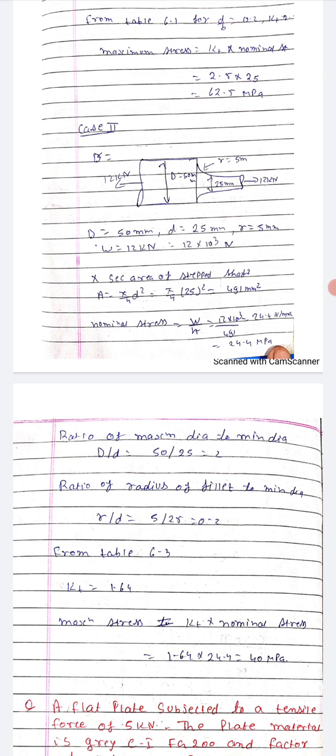For the second case, write down given. From the data book of RS Khurmi you can easily find the area: a is equal to pi by 4 d square, so pi by 4 into 25 square is 491 mm square. This is the nominal area.